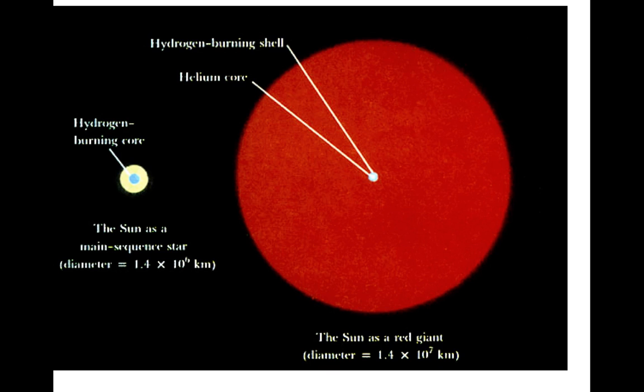This is a picture of what the Sun will look like at this stage. On the left, you see the Sun as it is now, and on the right, you see the Sun as a red giant, with a diameter that's very, very much larger than the original Sun, and you see the helium core surrounded by this very small hydrogen-burning shell.